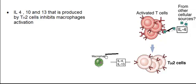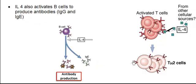Interleukin 4 produced by the T helper 2 cell will inhibit the activity of macrophages. So macrophages are inhibited by interleukin 4 produced by T helper 2 cells. To summarize: T helper 2 cells are produced in response to interleukin 4, they produce interleukin 4 themselves, and interleukin 4 further stimulates more T cells to become T helper 2 cells. Meanwhile, interleukin 4 produced by T helper 2 cells will also stimulate B cells to produce antibodies.